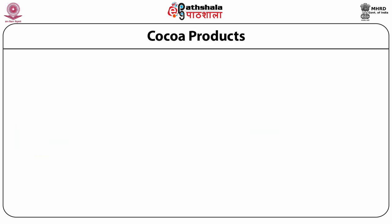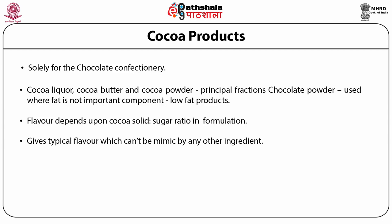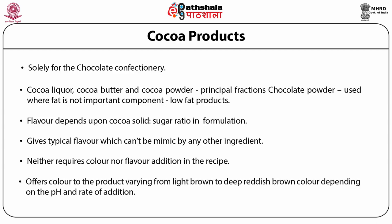This class of product is solely used in the preparation of chocolate confectionery. Cocoa liquor, cocoa butter, and cocoa powder are the principal fractions obtained after processing cocoa beans. Chocolate powder can also be used where fat is not an important component. The flavor of chocolate depends upon the cocoa solids to sugar ratio in the formulation. It gives a typical flavor which cannot be mimicked by any other ingredient, and it offers color varying from light brown to deep reddish brown depending on pH and the rate of ingredient addition.